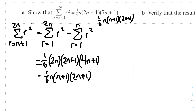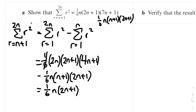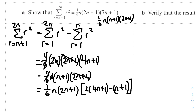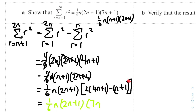We can see we need to factorize one-sixth, n, and (2n+1) — which appear in both terms. Factorizing gives one-sixth times n times (2n+1), leaving 2(4n+1) minus (n+1). Expanding: 8n+2 minus n minus 1 gives 7n+1. Therefore the sum equals one-sixth n(2n+1)(7n+1), which is the required result.